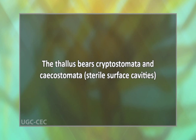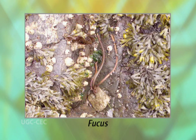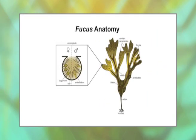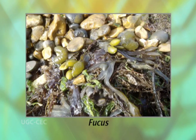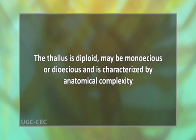The thallus bears cryptostomata and sori, that is sterile surface cavities. The base of the thallus is stipe-like due to abrasion of the tissue lateral to the midrib. The swollen tips of the thalli, the receptacles, which lack midrib, are covered with small scattered pimple-like projections with small openings which lead into cavities known as conceptacles. The inflation of the receptacles is due to the production of a large amount of mucilage. The thallus is diploid and may be monoecious or dioecious, characterized by anatomical complexity.